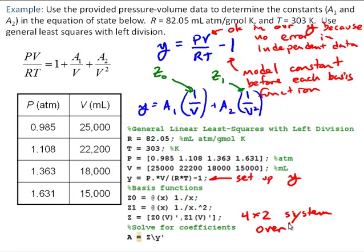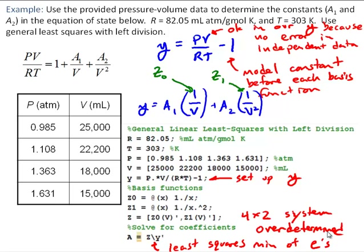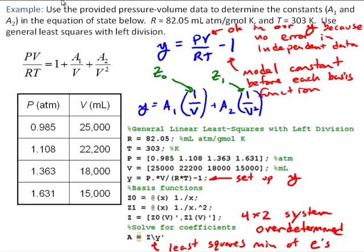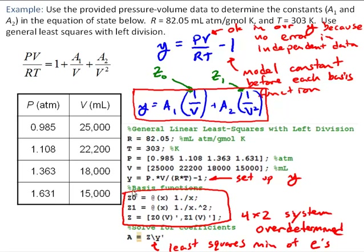The system is overdetermined, but left division handles that by using QR factorization to solve the system and minimize the residuals in a least squares sense. To summarize, implementing general linear least squares comes down to two keys: setting up Y as a linear combination of basis functions, and then building your matrix of basis functions. After that, you simply apply left division.